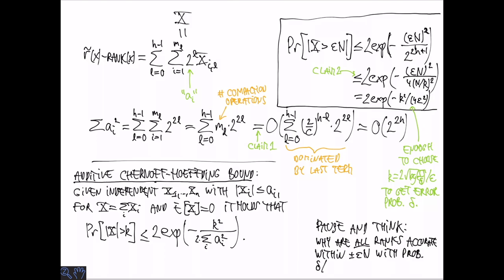Now, before we move on, I would like you to think about what kind of delta suffices if we want a good rank for all queries. So in particular, we want ranks that are accurate within epsilon N for all queries. And I claim that we actually get this with probability which is delta divided by epsilon.